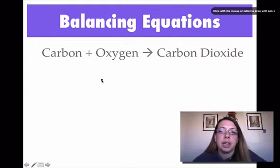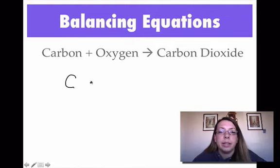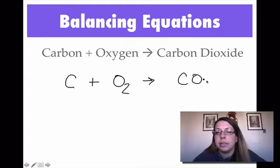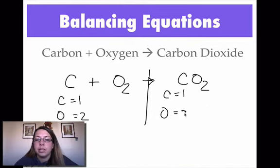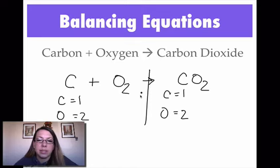The next one: carbon and oxygen — I have to write the formula first and then balance it. Carbon and oxygen, with oxygen being one of those diatomics, gives me carbon dioxide (CO2). I split it in half: carbons and oxygens on both sides — one carbon and two oxygens, one carbon and two oxygens. I don't have to put ones in there; they are automatically assumed to be one if nothing is written. So I don't have to balance it — it's already balanced for me. I just needed one of everything.